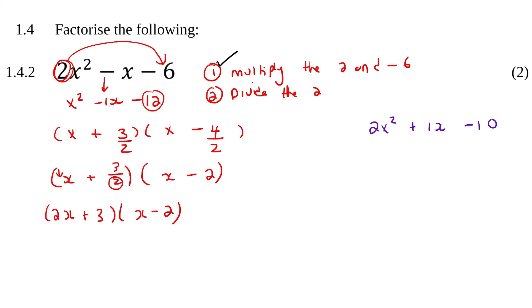So the last one we can try is 2x squared plus 1x take away 10. So step 1, we're going to write it as x squared plus 1x. And then you're going to multiply this with that. So it becomes minus 20. Then I want you to go factorize that one like you normally would. So it's going to be x and x.